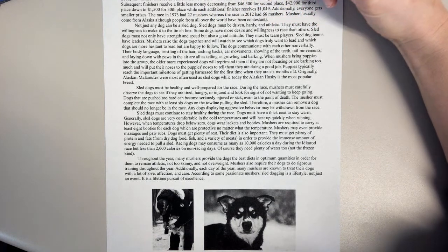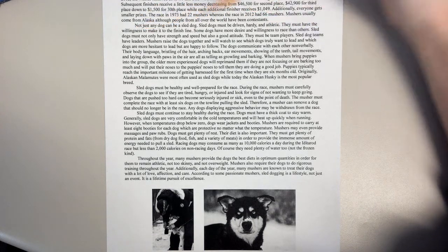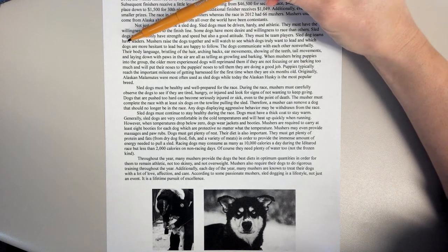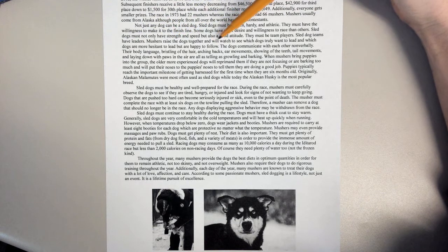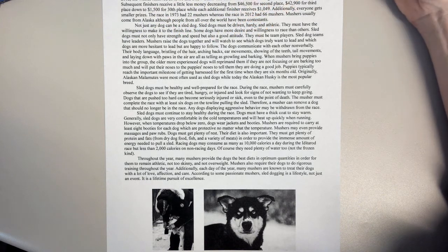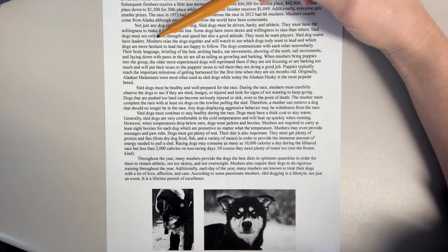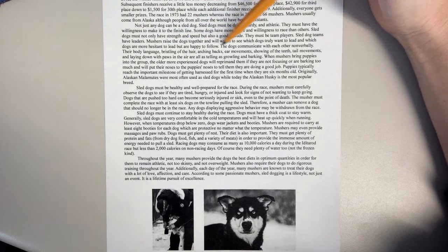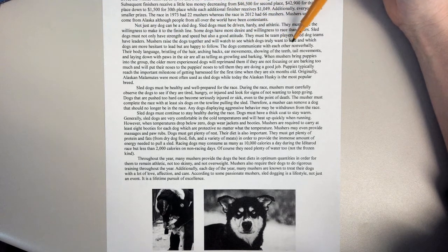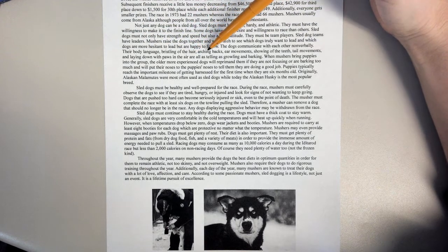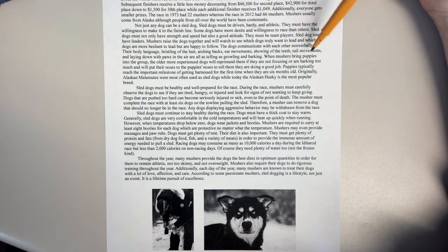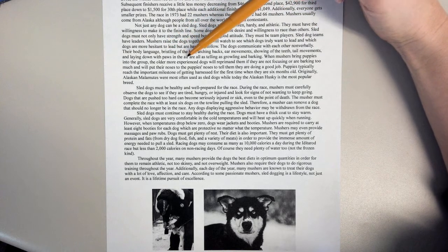Sled dogs must not only have strength and speed but also a good attitude. They must be team players. Sled dog teams have leaders. Mushers raise the dogs together and will watch to see which dogs truly want to lead and which dogs are more hesitant to lead but are happy to follow. The dogs communicate with each other non-verbally. Their body language—bristling of the hair, arching backs, ear movements, showing of the teeth, tail movements, and laying down with paws in the air—are all as telling as growling and barking.